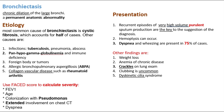A patient with bronchiectasis will present with recurrent episodes of very high-volume purulent sputum production, which will suggest the diagnosis. Hemoptysis might also occur, and dyspnea and wheezing are present in 75% of patients.